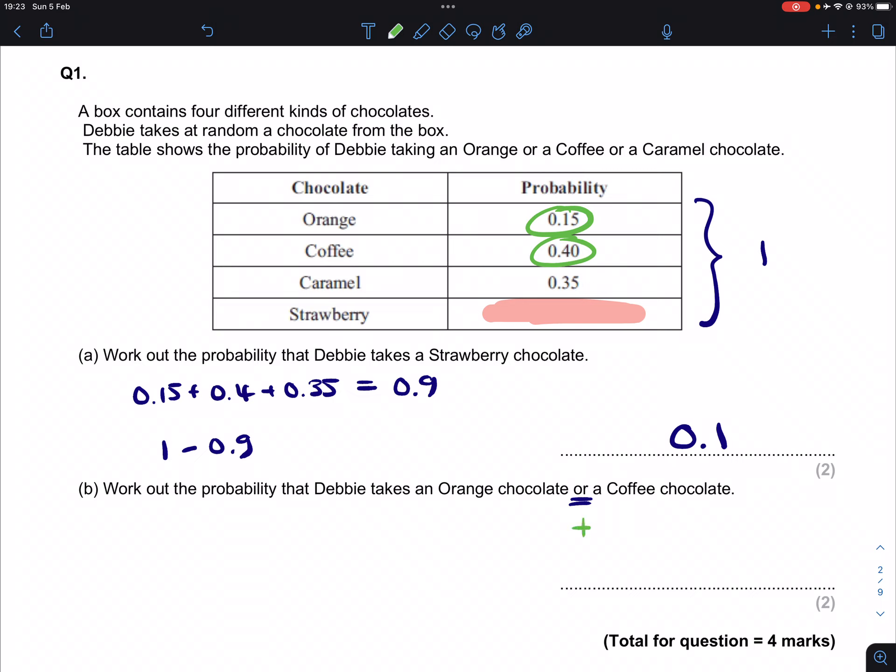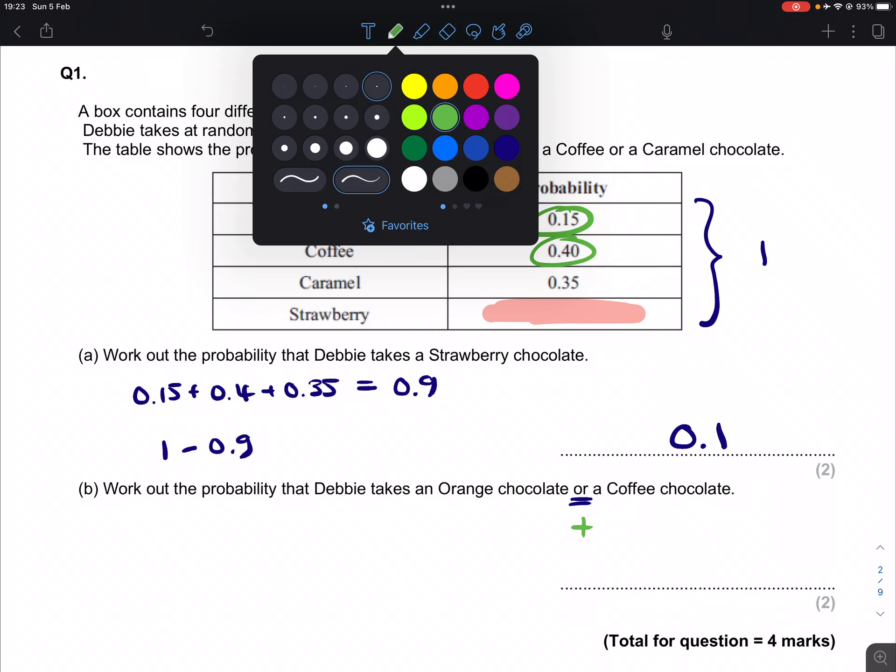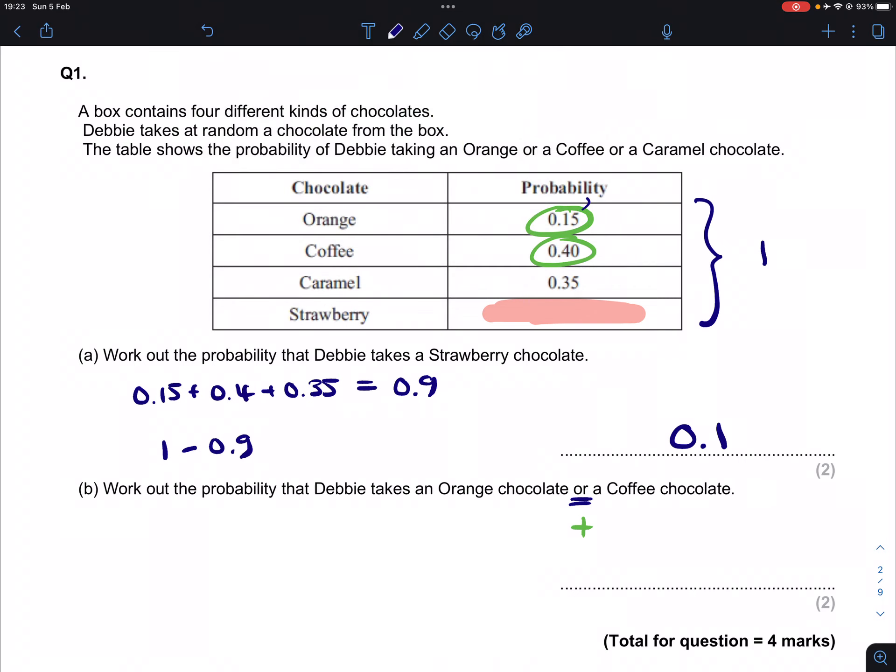Now whenever we have the word 'or' in probability, we are going to add them together because we increase our chances. We don't mind which one we're going to get, it's going to be an orange or coffee. So either way, our probability of getting one or the other will increase. If we add these together, we will get 0.55.